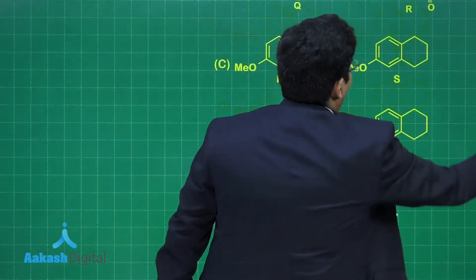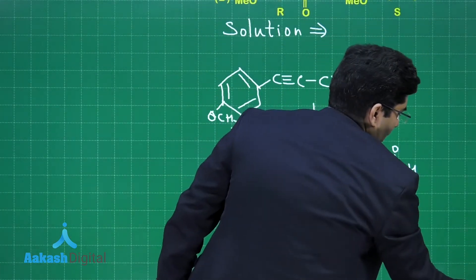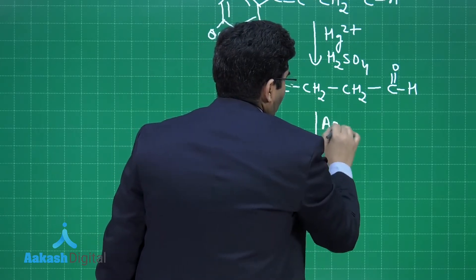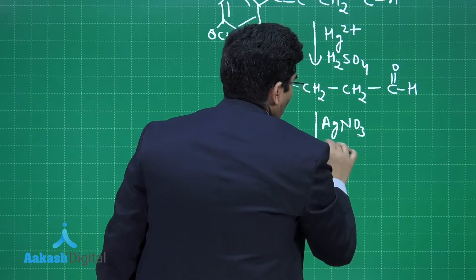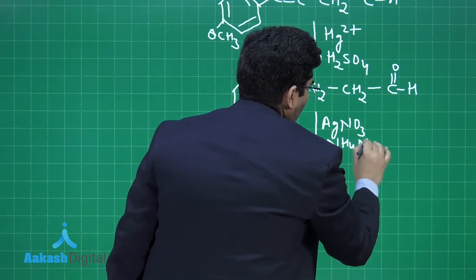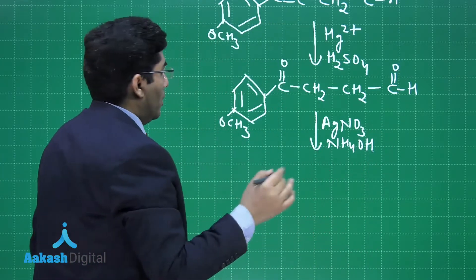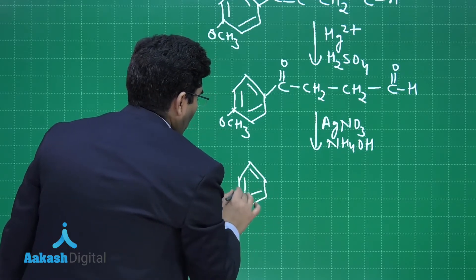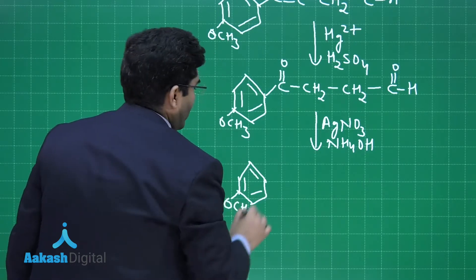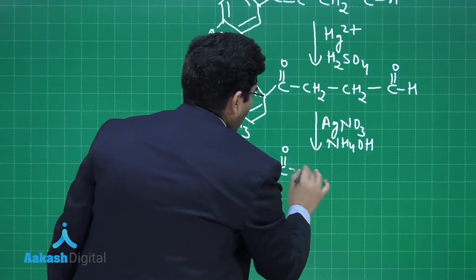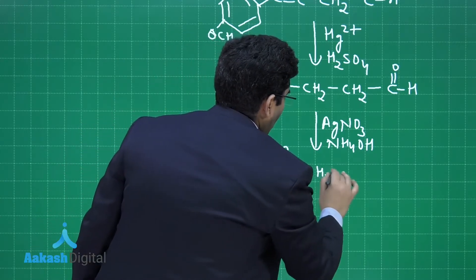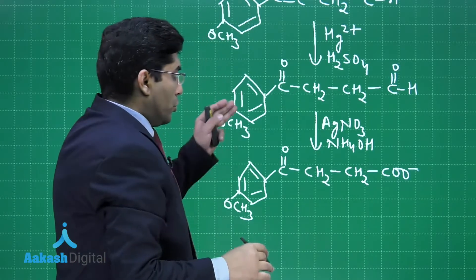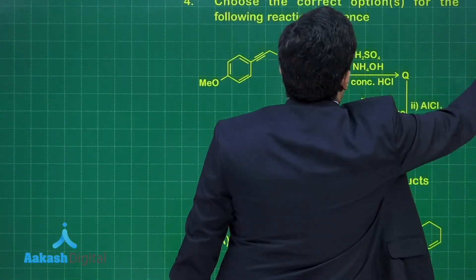The next reagent is AgNO3 plus NH4OH — this is Tollens' reagent. With Tollens' reagent, the aldehyde group converts into a carboxylate (acid). The product will be: methoxy-benzene — CH2—CH2—CH2—CH2—COO⁻.